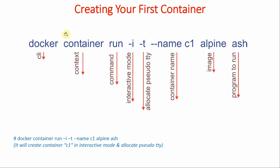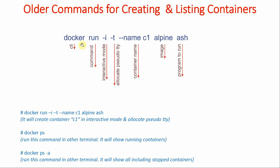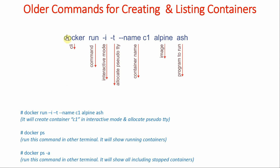You should always use the latest commands because the older ones may get deprecated. The proper full command is docker container run, using the container context. The shorthand docker run -it --name c1 also works, but it is recommended to always use the full context — docker container run — as the proper, up-to-date command.